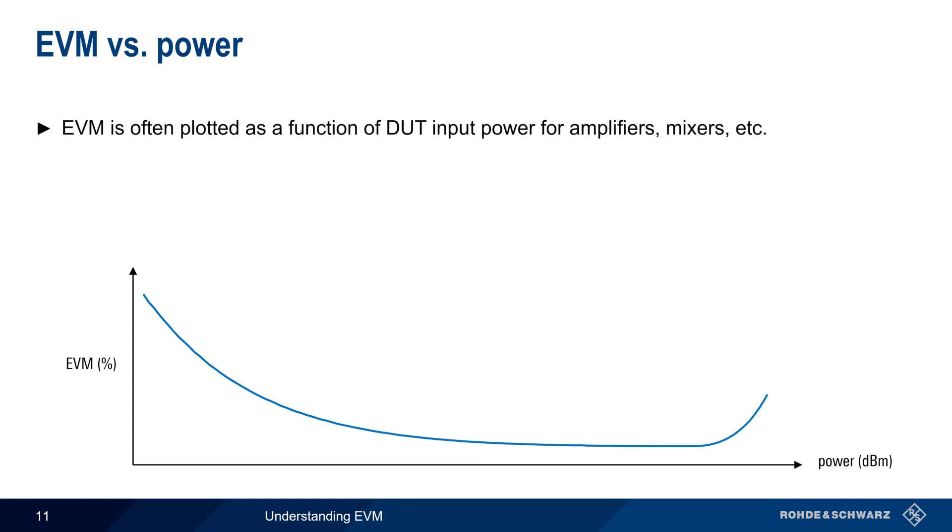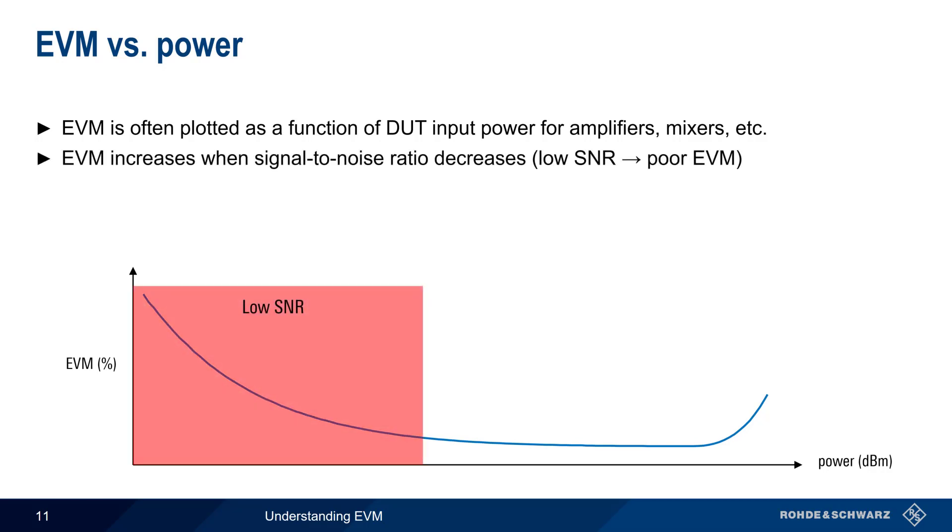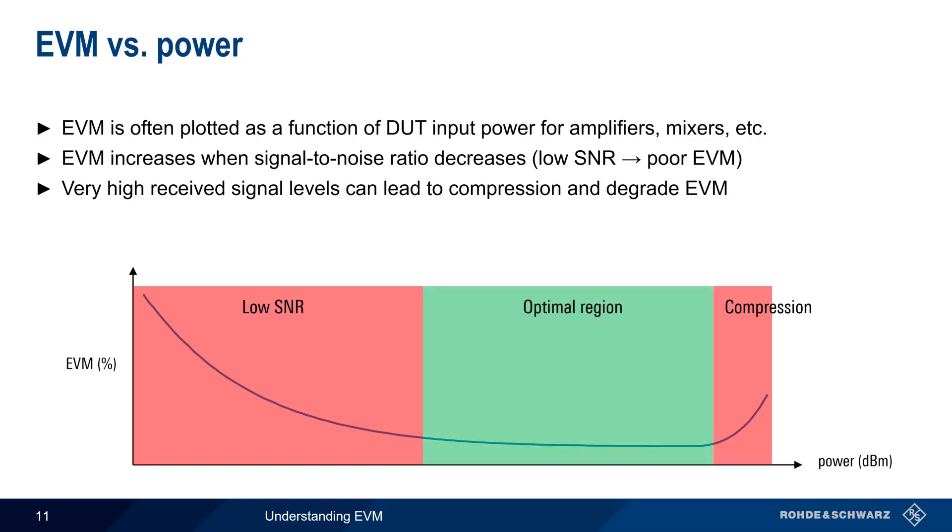Another useful way to look at EVM is to plot EVM as a function of input power, and this is normally done when measuring devices such as amplifiers, mixers, etc. Here we see a typical curve of EVM versus power. At very low input power levels, the signal-to-noise ratio tends to be low, and low SNR can often lead to poor EVM. Conversely, very high input power levels may push the device under test into compression, and this will also degrade EVM. There is typically an optimal power region in which the best EVM performance is achieved, and plotting EVM versus power is a convenient way of determining the limits of this region.